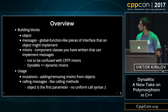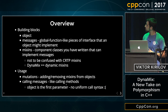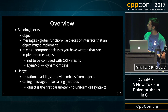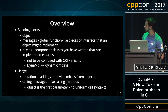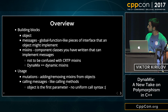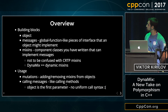Dynamics has three building blocks: objects, messages, and mixins. Messages are global function-like pieces of interface which objects might implement. Mixins are component classes you write that implement different messages — these are not to be confused with CRTP mixins. Dynamics stands for dynamic mixins. We use the library by mutating objects, by adding and removing mixins at runtime, and we also call messages from these objects, which is like methods. The object is always first as a parameter.